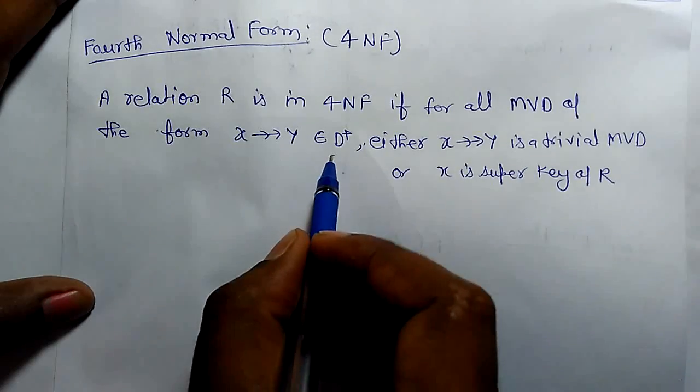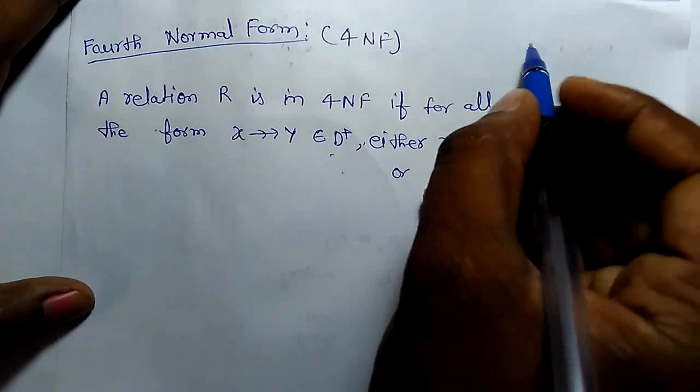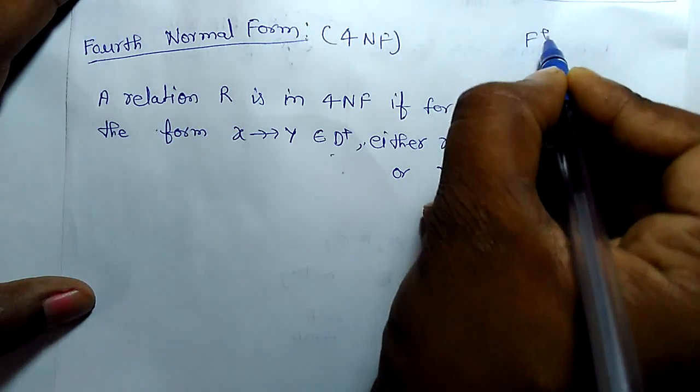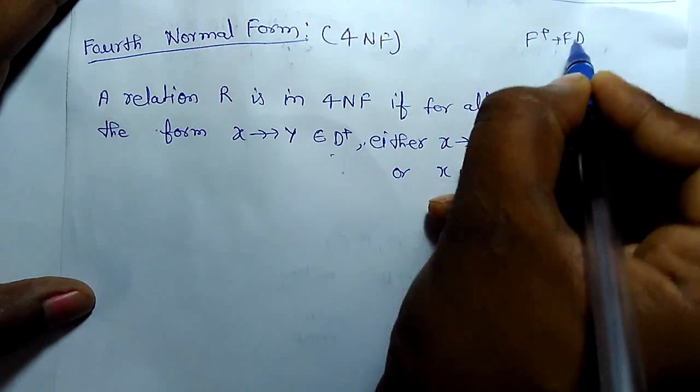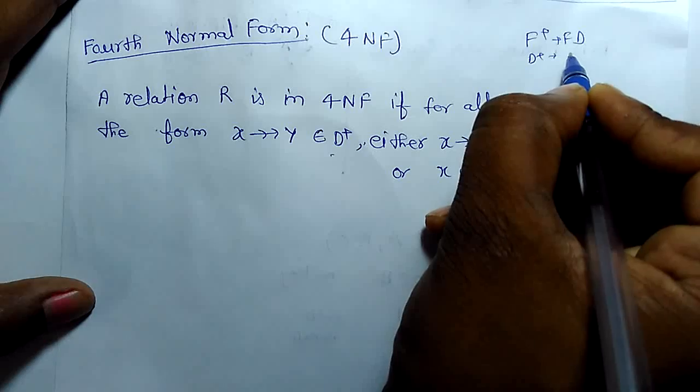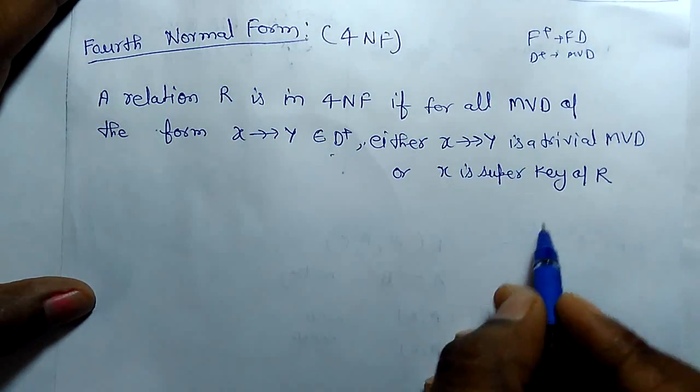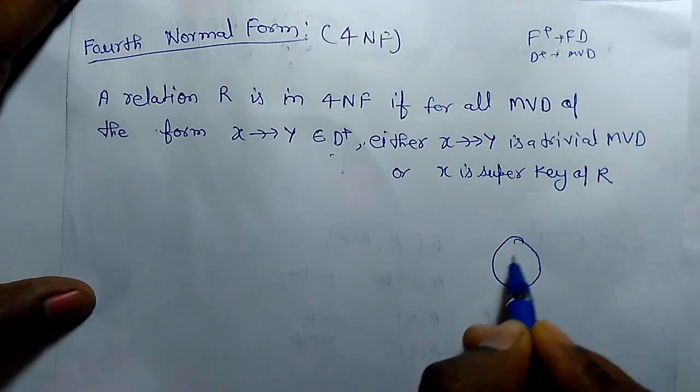that belongs to D closure, this is a multivalue dependency closure, similar to F closure in functional dependency. D closure we have taken as multivalue dependency here if you can generate in this way.